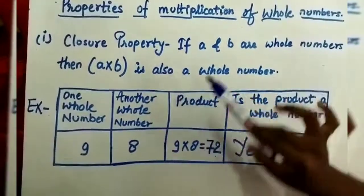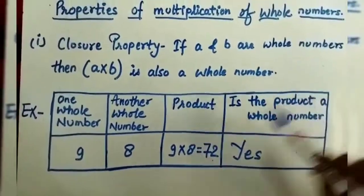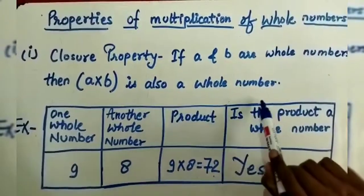Do you know what is closure property? If A and B are whole numbers, then A into B is also a whole number.